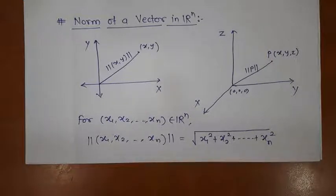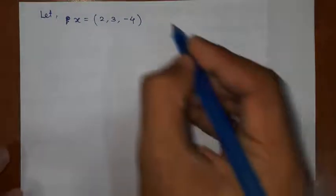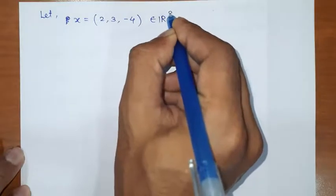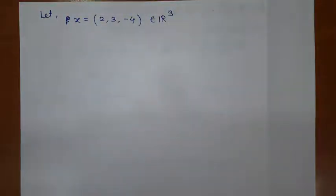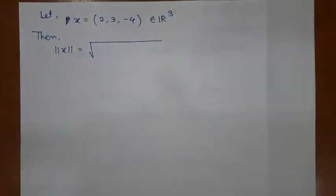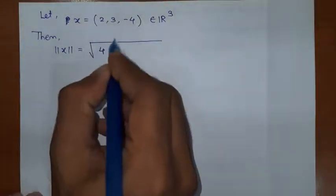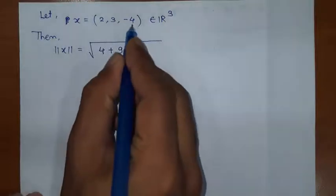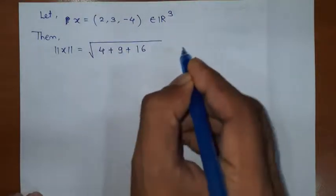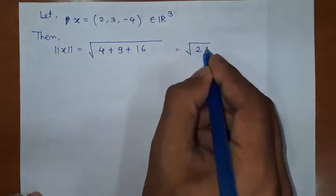Let us see one example of how to calculate this norm. I am going to take an arbitrary point in R3: (2, 3, −4). This is an element of R3 since it has 3 components. To calculate its norm, we take the square root and inside we take the square of each component. So: square of 2 is 4, plus square of 3 is 9, plus square of −4 is 16. The answer is √29.